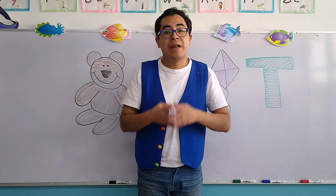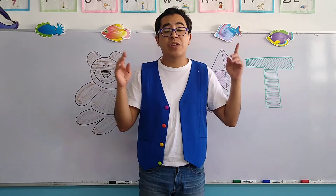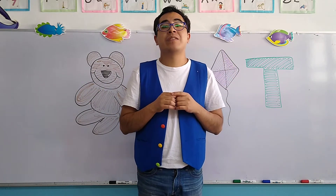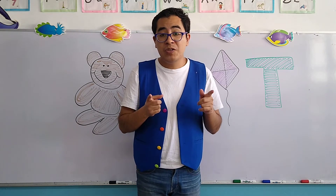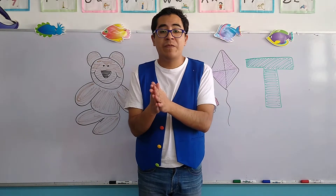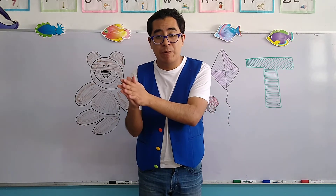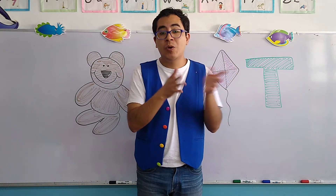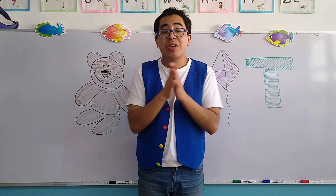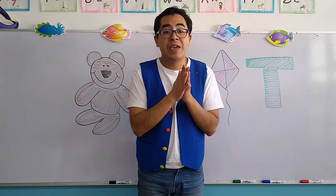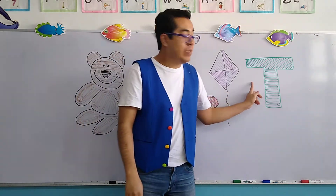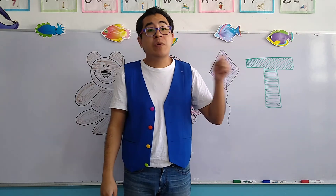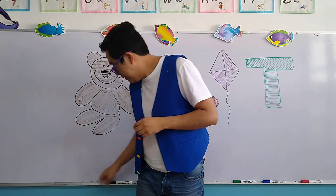Very good. Now, like I mentioned, today we're going to start with the letter T. In the case of names of people, we can use it for Tito or Tomas — those two names begin with the letter T, capital T. And I am going to show you small t.